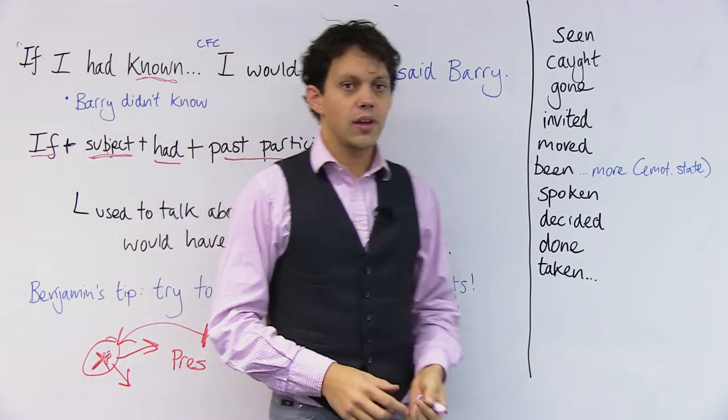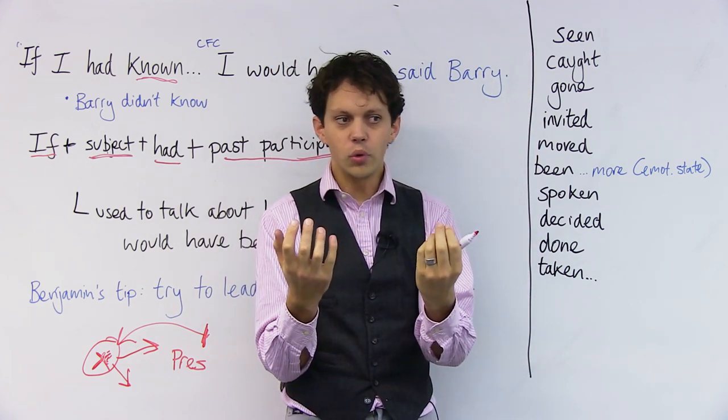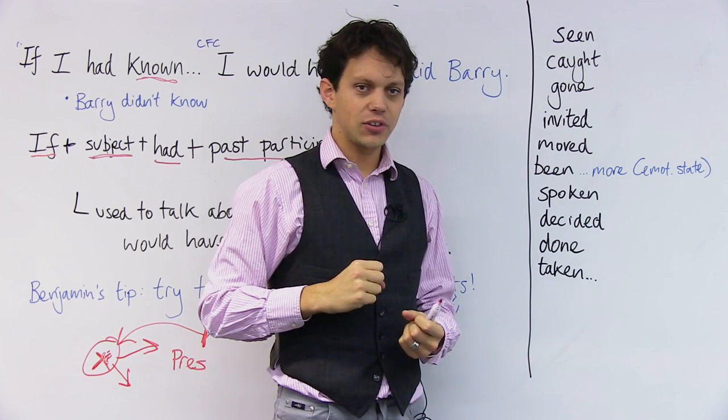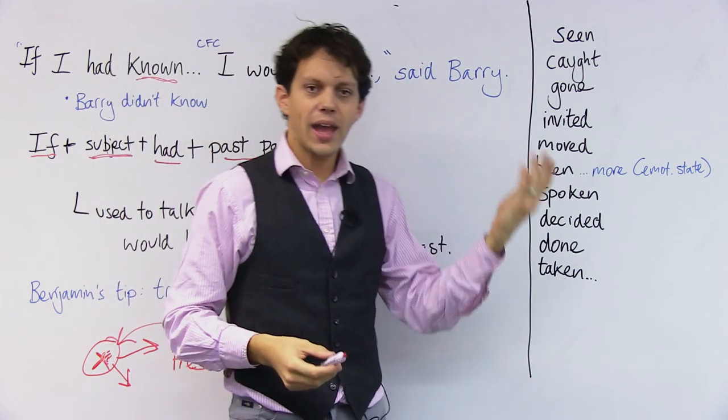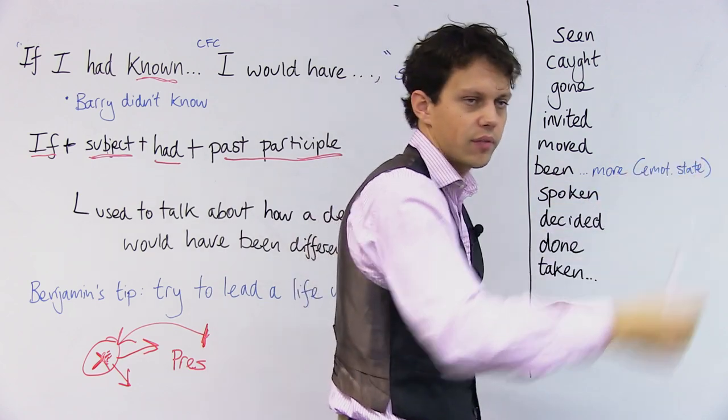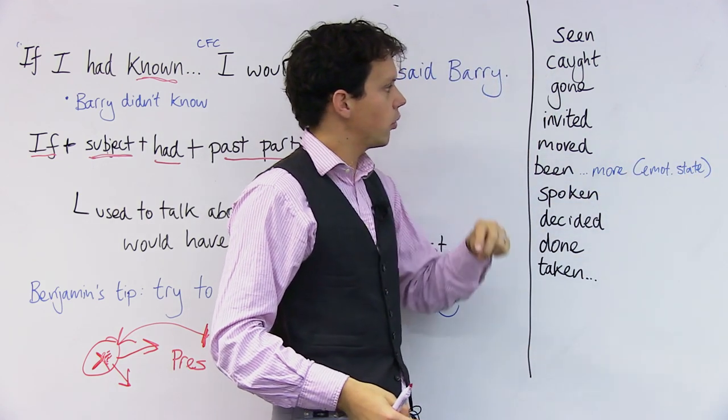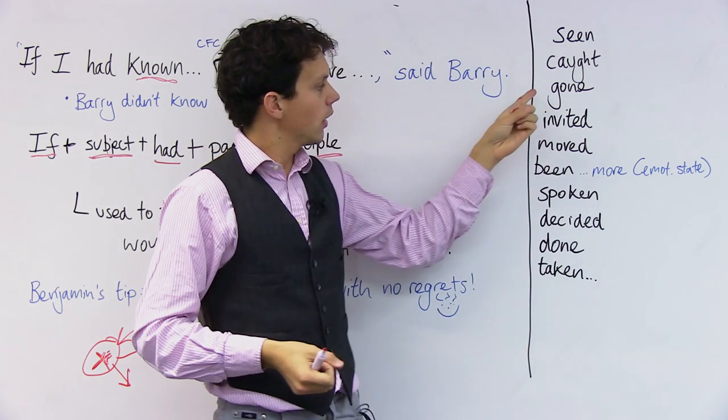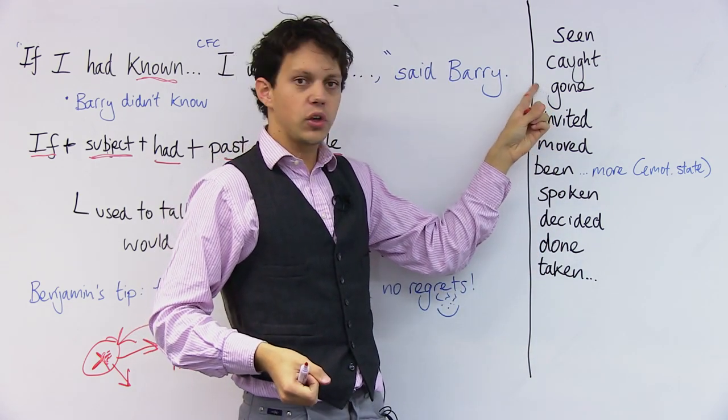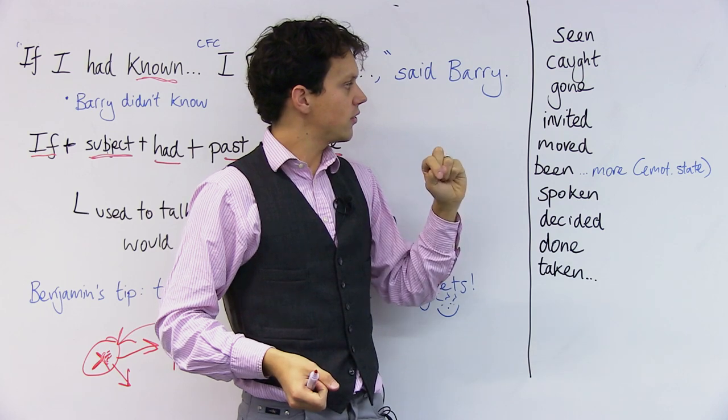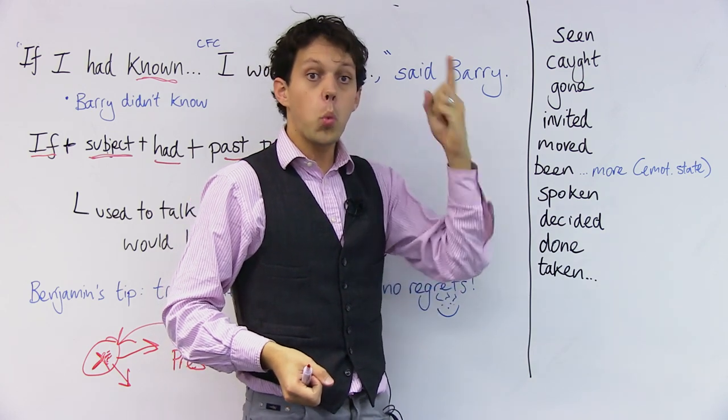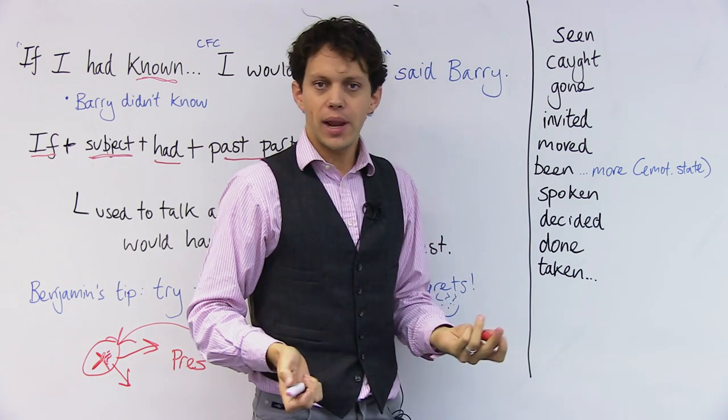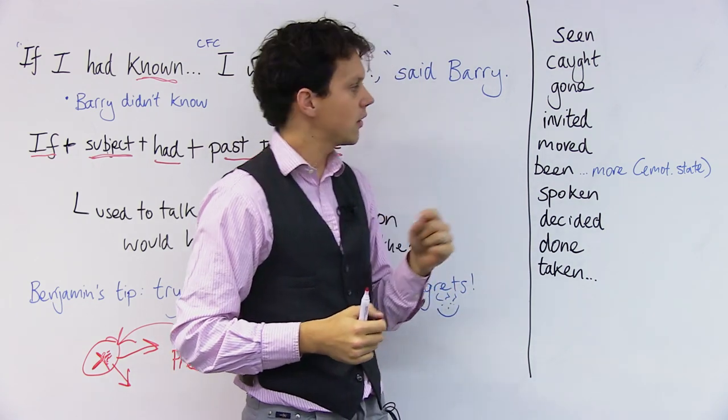If I had caught the ball, we would have won the cricket match. So same structure again. If I had and then would have. If I had caught the ball, we would have won the game. If I had gone to the stadium, I would have seen my favorite player. So seen again is in the past tense.